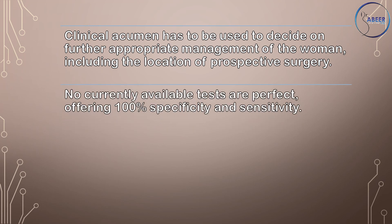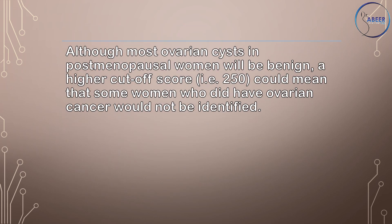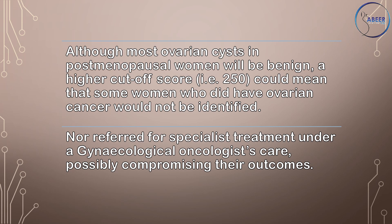No currently available tests are perfect, offering 100% specificity and sensitivity. However, women could be counseled that RMI scores of less than 25, between 25 and 250, and greater than 250 carry a risk of cancer of less than 3%, around 20%, and around 75% respectively, based on historical validation data. Although most ovarian cysts in postmenopausal women will be benign, a higher cut-off score — for example 250 — could mean that some women who did have ovarian cancer would not be identified nor referred for specialist treatment under gynecological oncologist care, possibly compromising their outcomes.